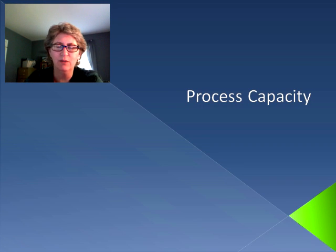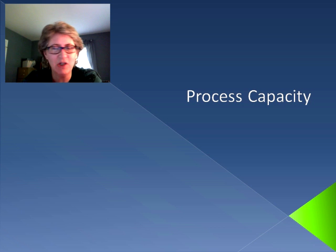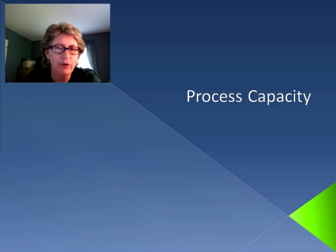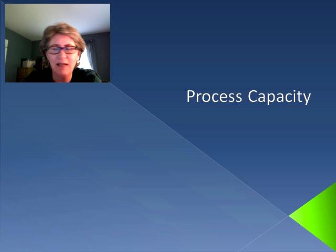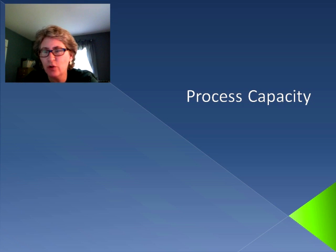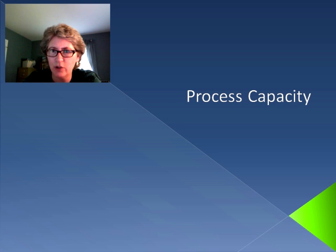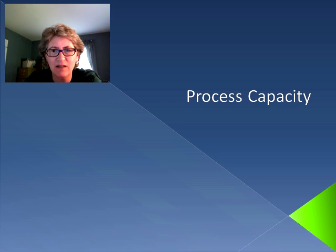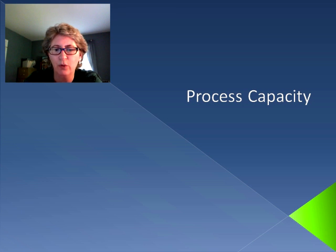Hello again, and welcome to Operations Management. In this session, we're going to be talking about process capacity. If you recall from Little's Law, there were three main components of process: inventory, throughput rate, and flow time. When we deal with process capacity, it has a direct relationship on the throughput rate.